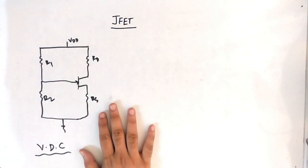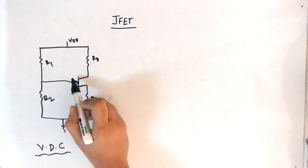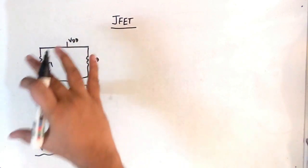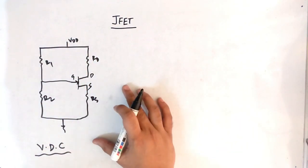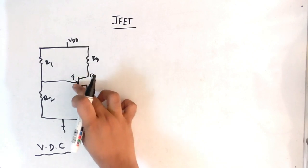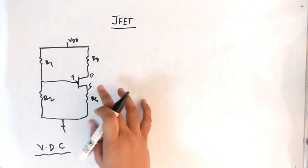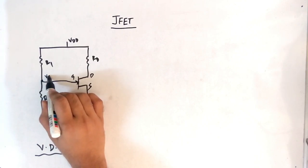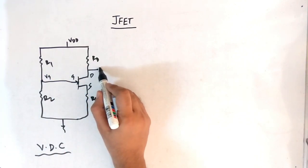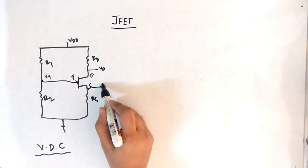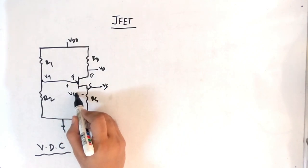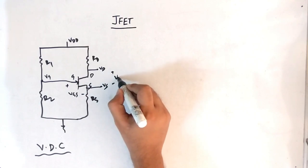Now we can look at this circuit. First, know the basics: this is the gate side, this is drain, this is source. This is the voltage divider configuration — in BJT you have seen the same circuit, but instead of the JFET we had the BJT. The important voltages here are VG at the gate, VD at the drain, VS at the source, and the hidden voltages are VGS and VDS.